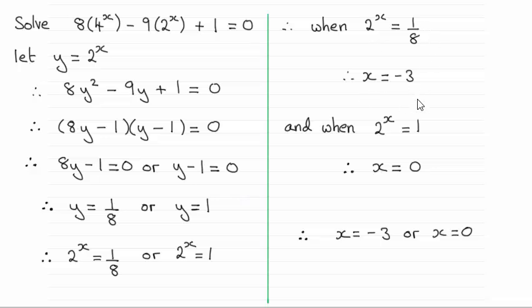And for 2 to the power x equaling 1, remember anything to the power 0 always is 1, so x had to be 0. That gives us our two answers: x equals minus 3 or x equals 0.